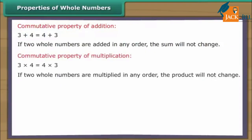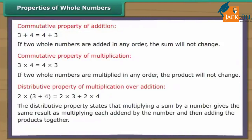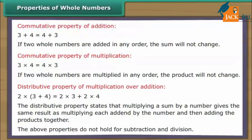If two whole numbers are added in any order, the sum will not change. If two whole numbers are multiplied in any order, the product will not change. The distributive property states that multiplying a sum by a number gives the same result as multiplying each addend by the number and then adding the products together. The above properties do not hold for subtraction and division.